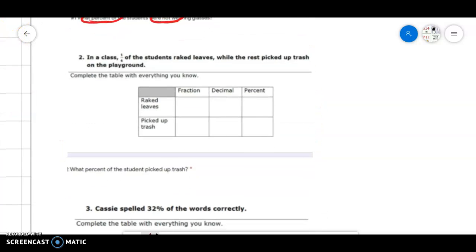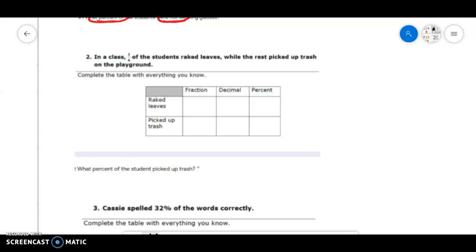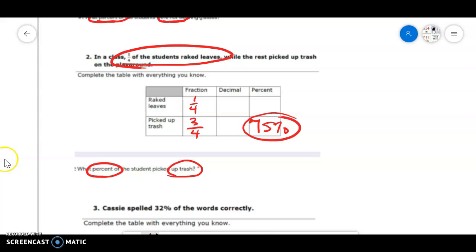On this first assignment, one-fourth of the students raised leaves. That means three-fourths picked up trash and they want the percent that picked up trash. We know this is 75%. And again, I had a lot of people tell me 25% on this one. So just reading more carefully is going to be necessary.